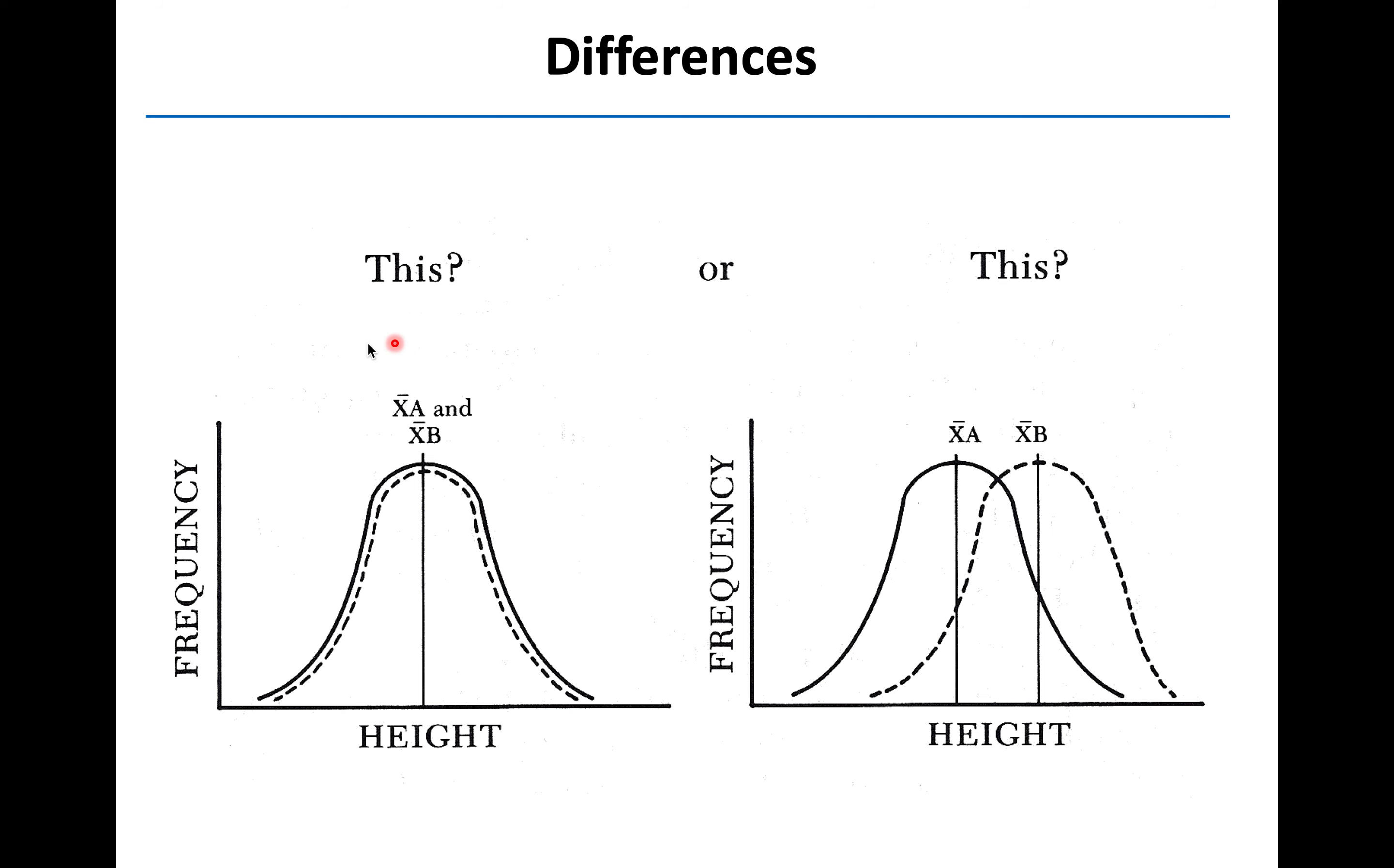So that would look something like this here on the left. Our group A is the solid line, group B is the dashed line. Data sets are exactly the same, same mean, no difference at all. But what would be more common, you might get that, but what would be more common is there's a little bit of difference. Some situation like this on the right, where the mean height of group A and the mean height of group B is a little bit different, but there's a lot of overlap between the two data sets. So you'd want to know is that difference statistically significant or not.